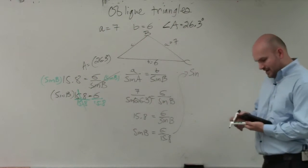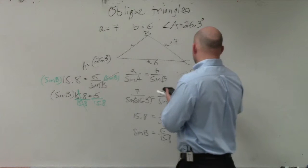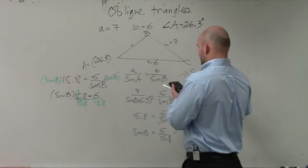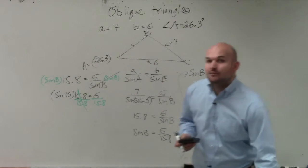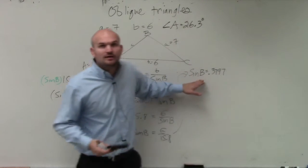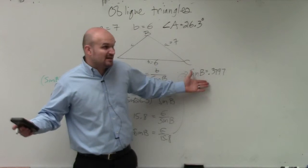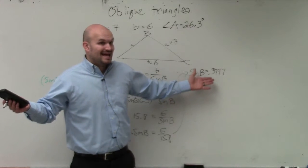OK. So therefore, I have sine of B is equal to 0.3797, and so forth. Well, again, what are we looking for? When we're looking for sine of B, we're looking for B, which B represents the angle.